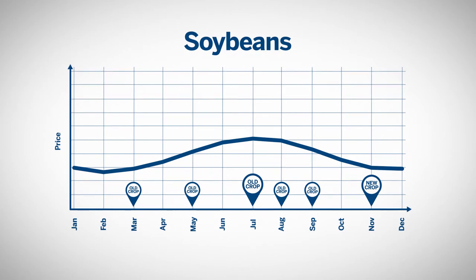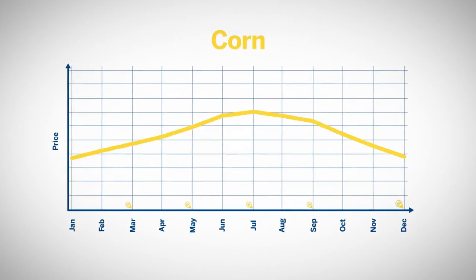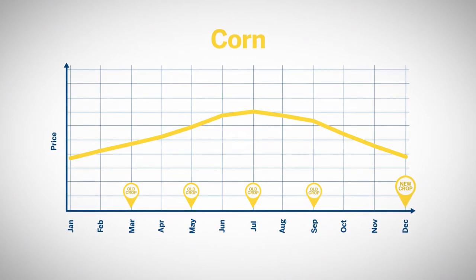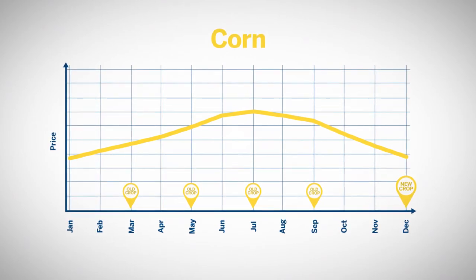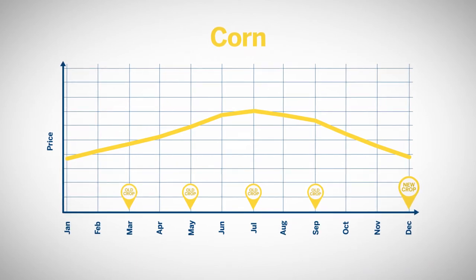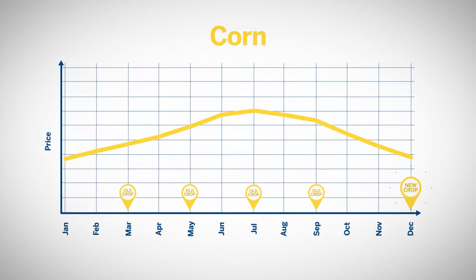Soybean meal and oil obviously have the same seasonal tendencies as soybeans. With corn, the most pronounced seasonal trend is the tendency for prices to be near the highest levels around July because of the uncertainty around new crop production, then to decline from mid-summer into harvest season. This chart shows the normal price curve relationship for corn futures and gives you a good idea of how this works. The old crop corn in July, for example, is priced much higher than the farther out new crop month of December.